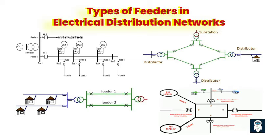Fifth, a double-ended feeder involves connecting two or more sources to a common feeder, providing redundancy and improved reliability. If one source fails or requires maintenance, the load can be seamlessly transferred to the other source, minimizing disruptions. Sixth, the radial ring feeder combines characteristics of both radial and ring main feeders, primarily operating in a radial configuration but incorporating a ring main at strategic points, providing redundancy and alternate paths while maintaining the simplicity of a radial feeder.